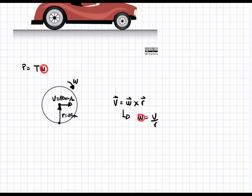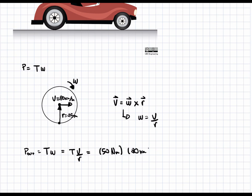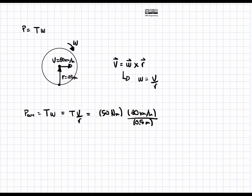Now that we have omega equals v over r, we can plug it into the power equation. So P_out equals torque times omega, which equals T times v over r. Plugging in values: 50 newton meters times 80 kilometers per hour divided by 0.5 meters. We also need to convert 80 km/h into meters per second by multiplying by 1/3.6, so that kilometers cancel with kilometers and hours cancel with hours, leaving meters per second.